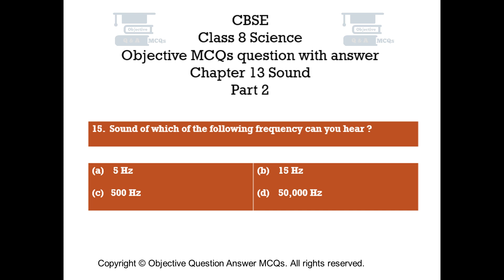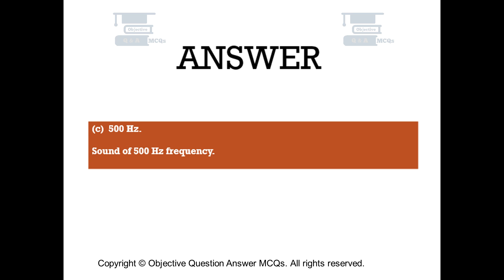Question number 15. Sound of which of the following frequencies can you hear? Option A: 5 hertz. Option B: 15 hertz. Option C: 500 hertz. Option D: 50,000 hertz. The right answer is option C — 500 hertz. Sound of 500 hertz frequency is within the audible range.